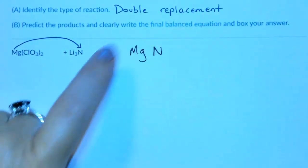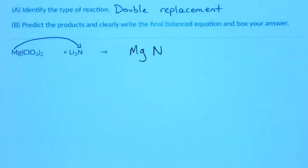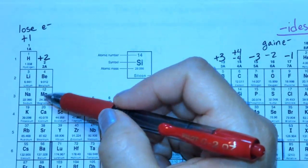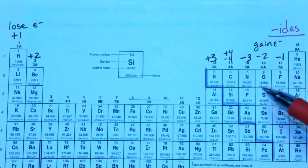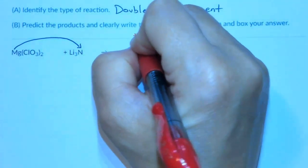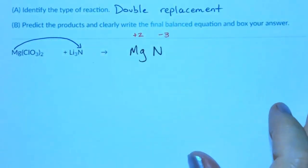Now we have to balance the charges between magnesium and nitride. Magnesium has a positive 2 charge. Nitride has a negative 3 charge. So positive 2 versus negative 3.